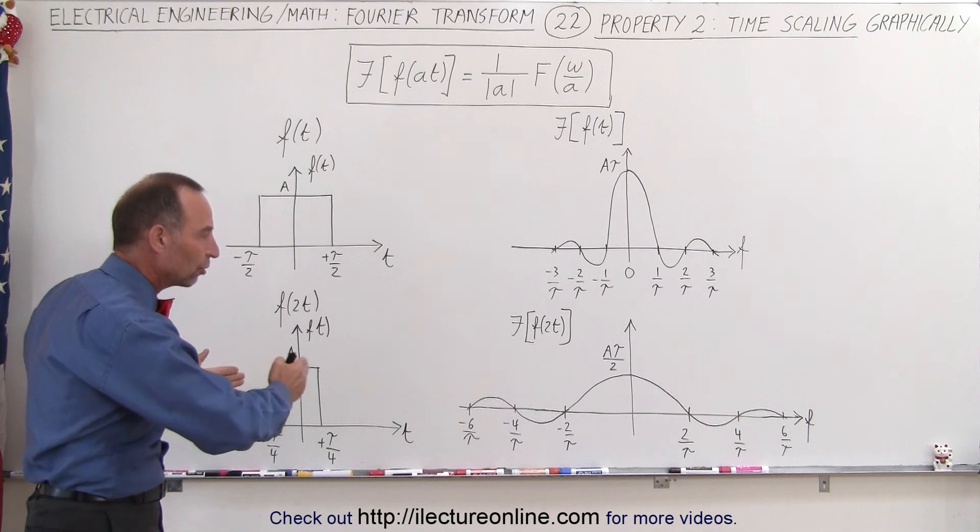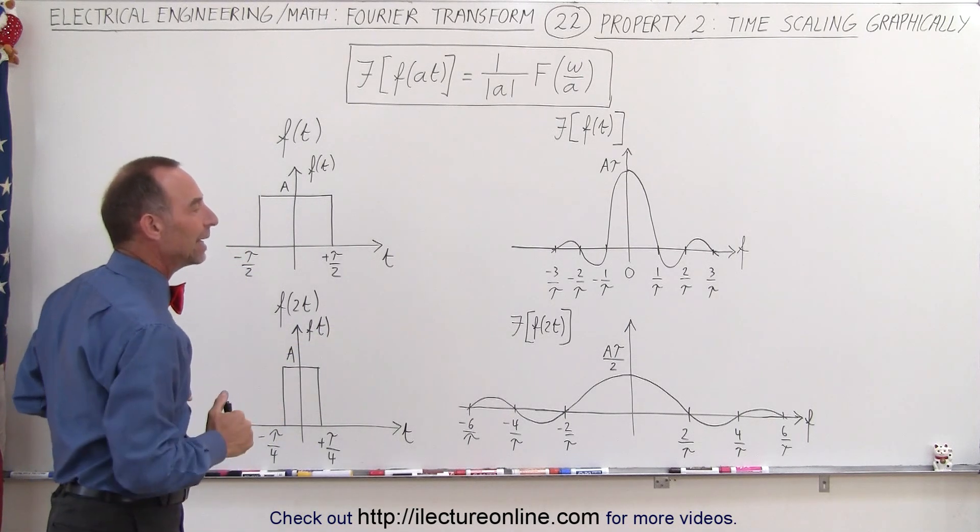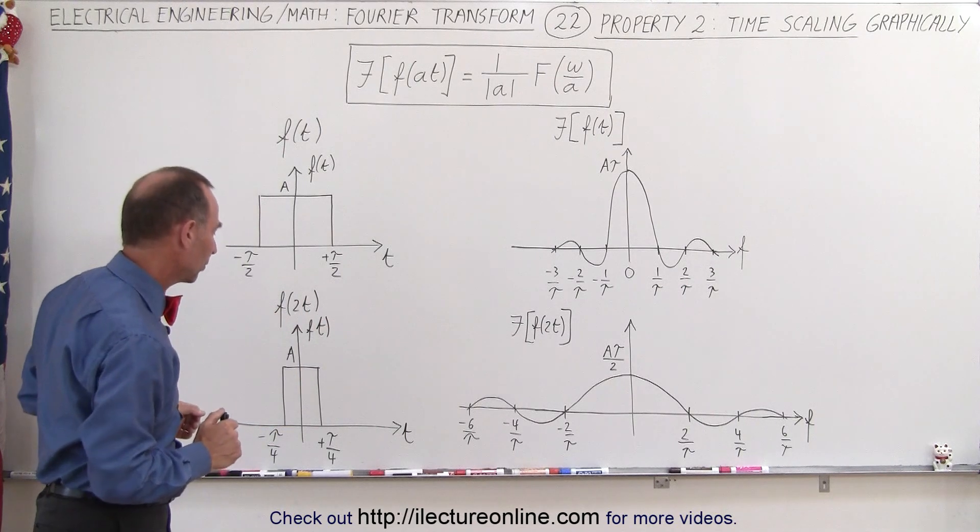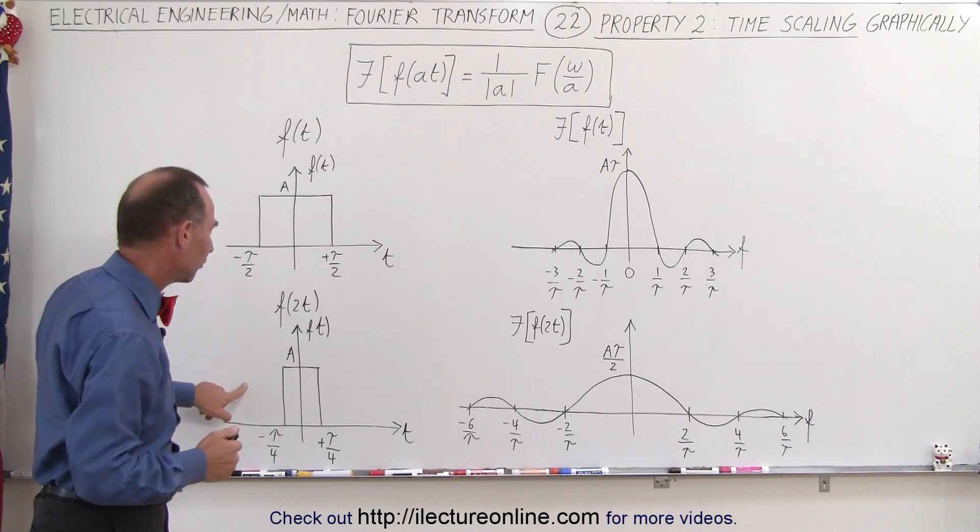A narrower pulse means that you're going to spread out the frequency in the Fourier transform, in the frequency domain, when you take the Fourier transform.